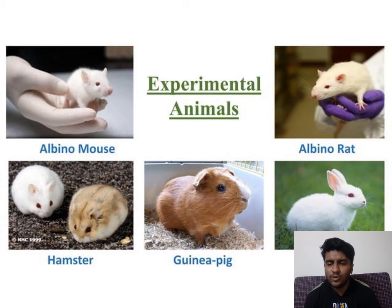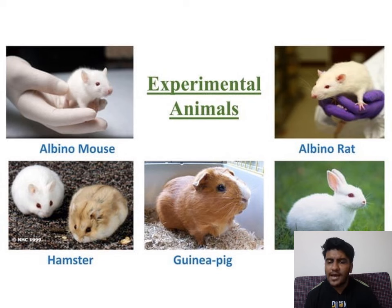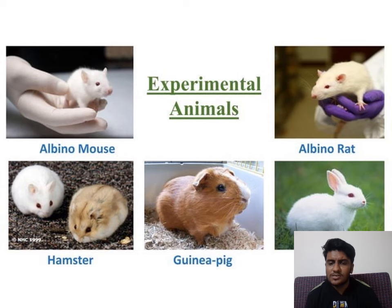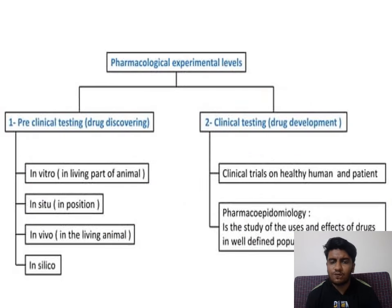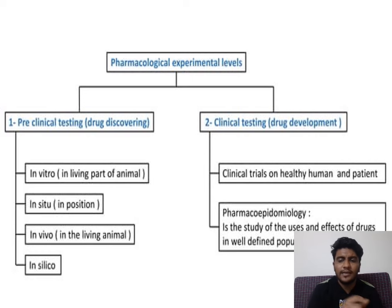There are nude mice, beige mice, albino mice, Wistar rats, C57, and different types of rats and mice available in different strains and breeds. Pharmacological experiments are of two types: preclinical and clinical. In preclinical testing, we have in vivo, in vitro, in silico, and in situ.